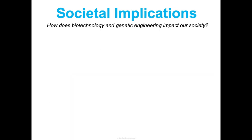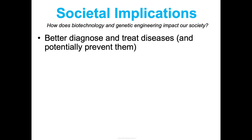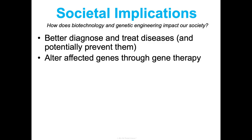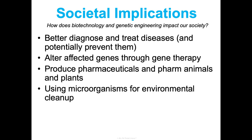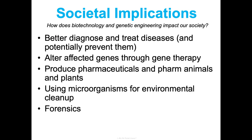This affects society in so many ways, with both positive and negative implications to consider in our research and report activity. Some positives are that we're able to better diagnose and treat diseases, alter affected genes through gene therapy, produce pharmaceuticals in farm animals and plants, use microorganisms for environmental cleanup, and apply these tools in forensics and agriculture. I know that was a quick overview, but I hope it piqued your interest, and I'm excited to talk more about it in class.